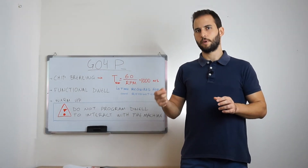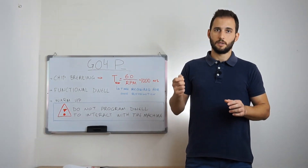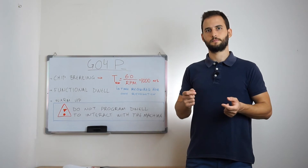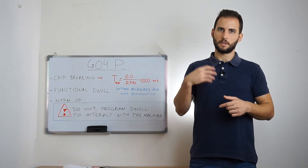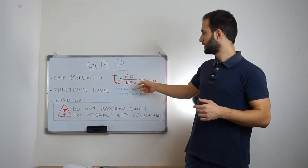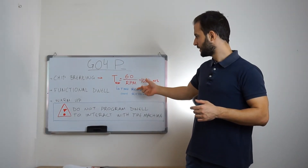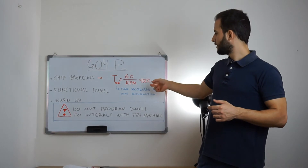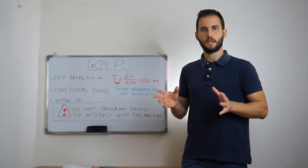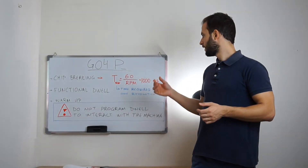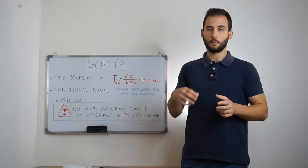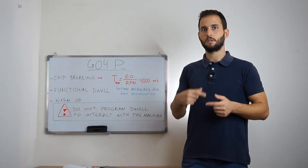In order to break the chips that are formed during machining, you have to give some time to the spindle in order to complete at least one rotation. The required time to complete this rotation is 60 divided by the rotational speed of the spindle of the machine tool, times 1000. This will give us the time in milliseconds. This implies that every time you want to program dwell, you have to consider the rotational speed of the spindle in order to give the appropriate time for the spindle to complete at least one rotation.